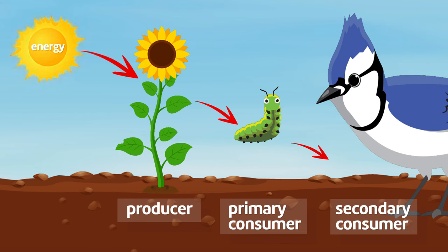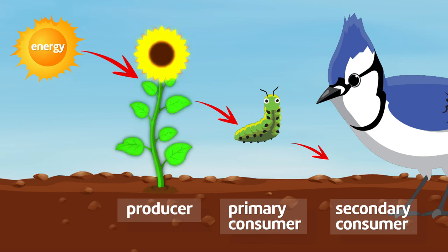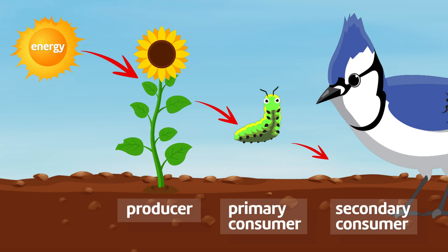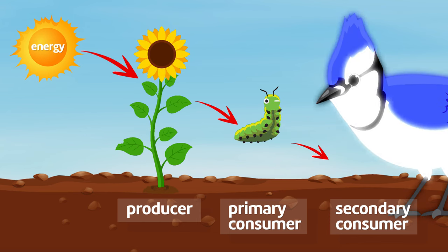In this way, energy is transferred up the food chain in one direction. But only the stored energy is available as food for the next level in the food chain.